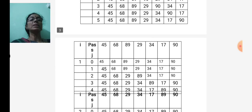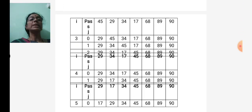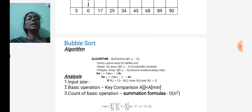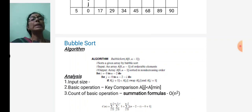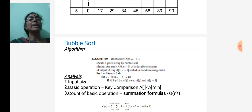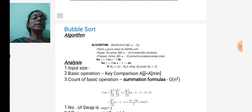The i loop executes a total of 5 iterations, and at every i iteration the j loop executes n minus 2 minus i times. In the algorithm analysis: the input size is n, the basic operation is the key comparison — if A[j] is less than A[minimum] we swap. The i loop runs from 0 to n minus 2, and the j loop runs from 0 to n minus 2 minus i.